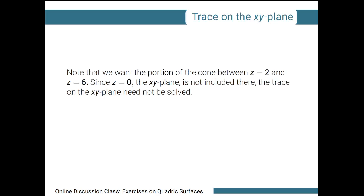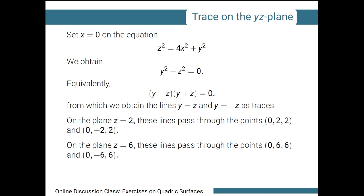We move on to the other traces. The trace on the xy plane, where z equals 0, is not needed since 0 is not between z equals 2 and z equals 6. So moving on, for the trace on the yz plane, we set x equals 0.